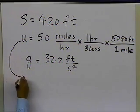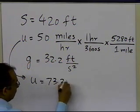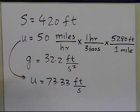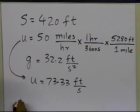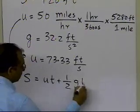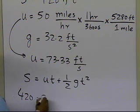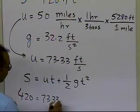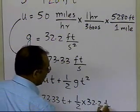From the conversion, I get a value for u which turns out to be 73.33 feet per second. Now substituting these values into s = ut + ½gt²: s is 420, u is 73.33, t is time, and ½g is 16.1 (half of 32.2), and then t squared.